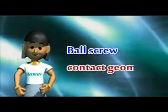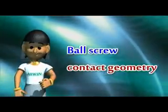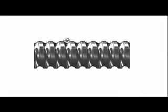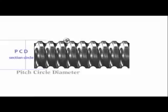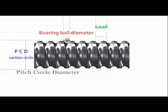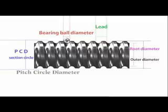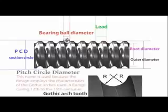Now we will introduce the contact geometry of ball screws. Pitch circle diameter is the diameter of the circle formed by the central diameter of ball screws' upper and lower ball bearings. The lead is the distance traveled by the nut when the screw turns one rotation. The root diameter is the smallest diameter of the threads. The outer diameter, also known as the nominal outer diameter, is the largest diameter of the threads. A gothic arched tooth design has two identical radii and an offset center.